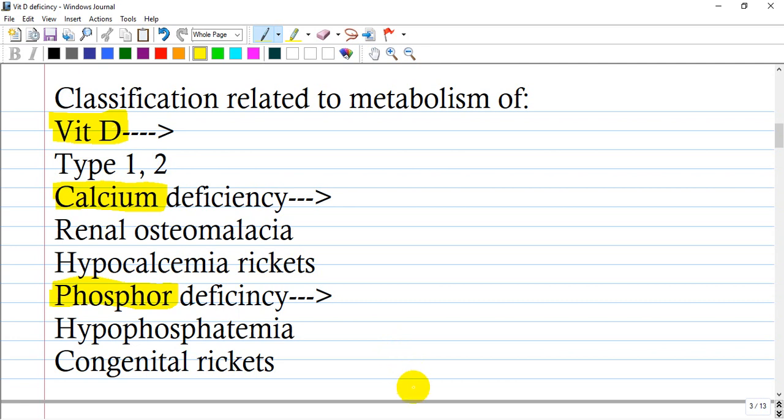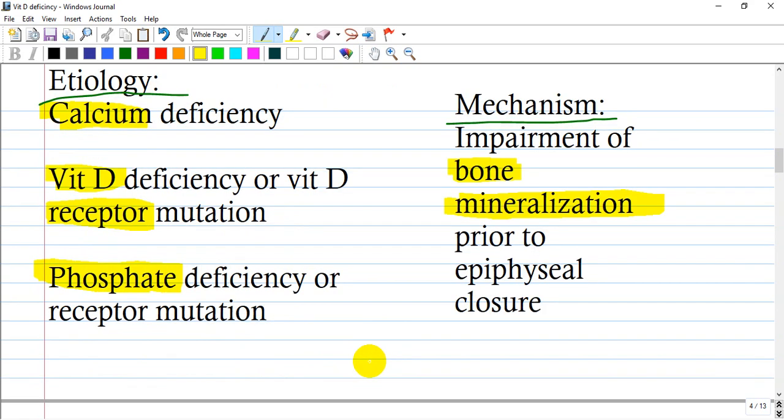Even reserve from bone does not help in this disease. There's also hypocalcemic rickets and phosphorus deficiency. Everything involved in bone metabolism, like parathyroid hormone, calcium, phosphorus, and magnesium, can contribute to disease aggravation. The etiology includes calcium deficiency, vitamin D deficiency, or vitamin D receptor mutation.